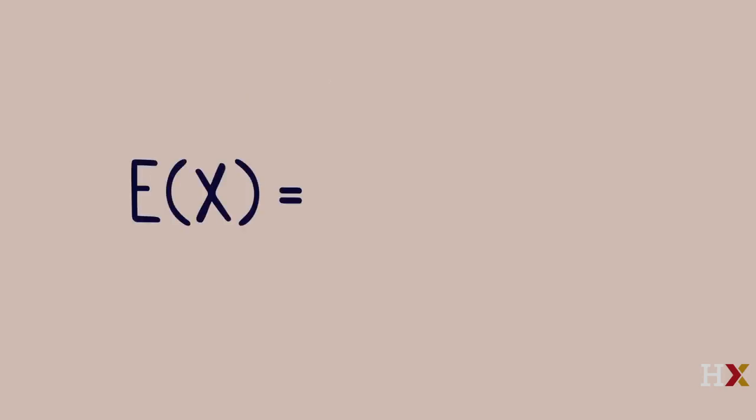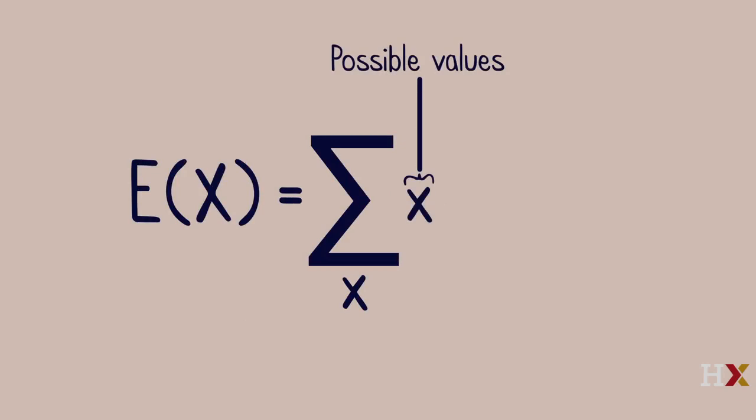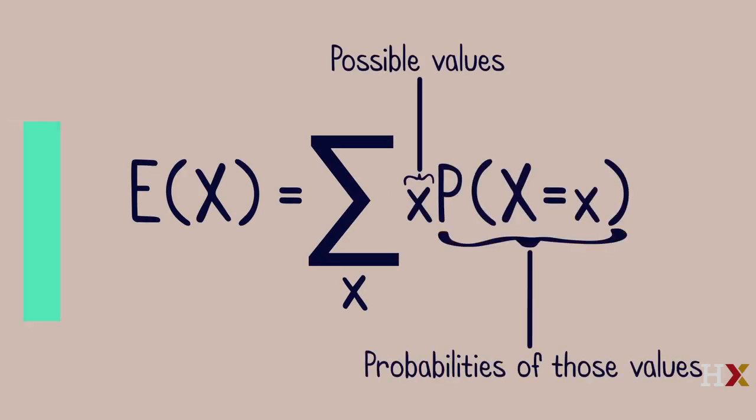In general, the expected value of a discrete random variable X is the sum of possible values times the probabilities of those values. E of X equals the sum over X of X times the probability that big X equals little x. Each possible value of X gets weighted according to its probability.